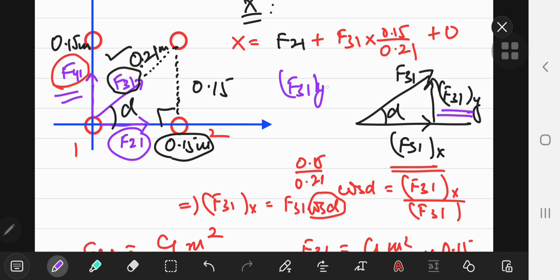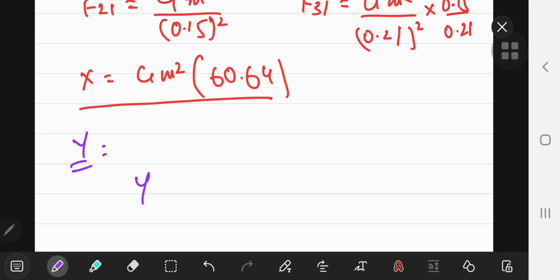So F sub 3, 1 sub y equals the force F sub 3, 1 times the sine of alpha. And the sine of alpha is going to be 0.15 divided by 0.21. So the y-force is going to be F sub 4, 1 plus F sub 3, 1 times the sine ratio, which was 0.15 by 0.21.